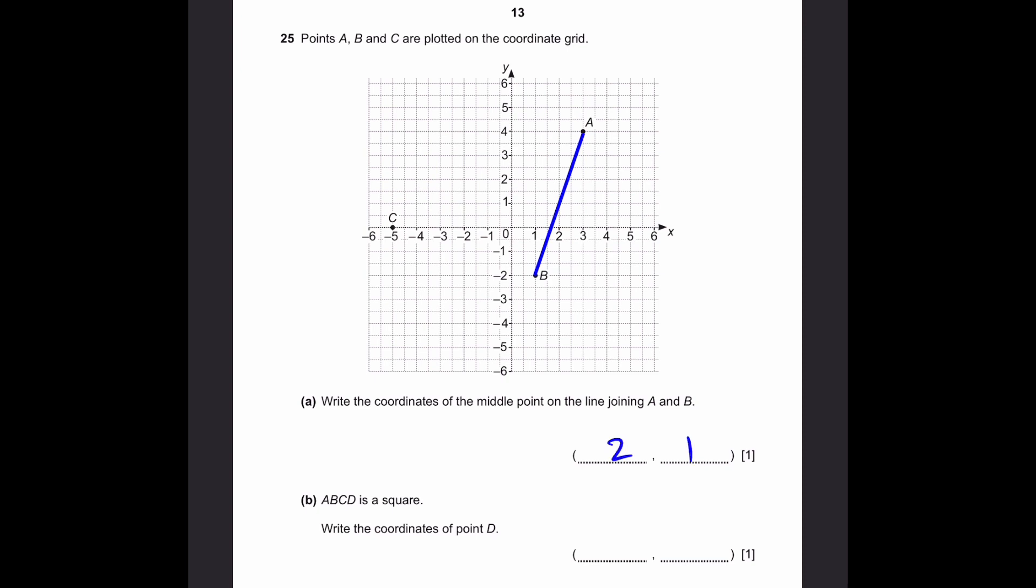Part B: A, B, C, D is the square. Write the coordinates of point D. Alright, so let's join the point C to B. So when we have one more point D somewhere around here, we'll get a square. What are the lengths of these sides?